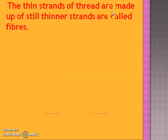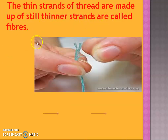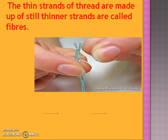The thin strands of thread are made up of still thinner strands called fibers. Sometimes when you try to thread a needle you find that the end of the thread has thin strands - you can see some thin strands here. This makes it difficult to pass the thread through the eye of the needle. These thin strands that we see are called fibers.